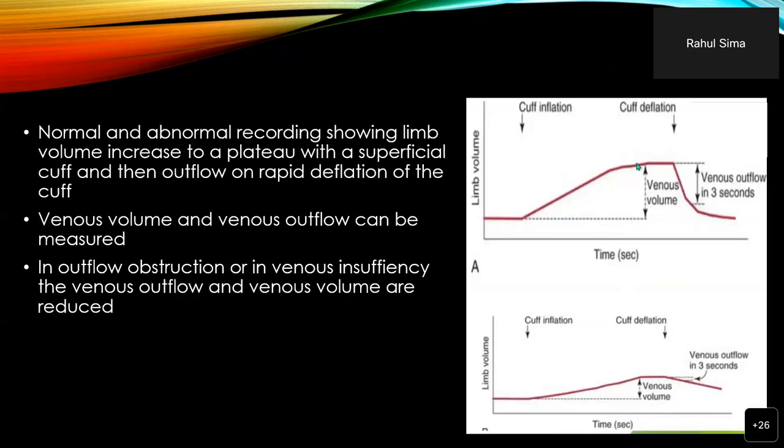Normal and abnormal recordings show limb volume increase to a plateau with a superficial cuff, then outflow and rapid deflation of this cuff. Venous volume and venous outflow can thus be measured. In outflow obstruction or venous insufficiency, the venous outflow and venous volume are reduced, as seen in the pictures on the right side.